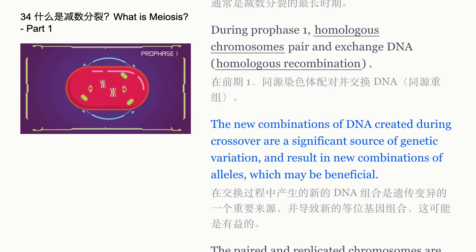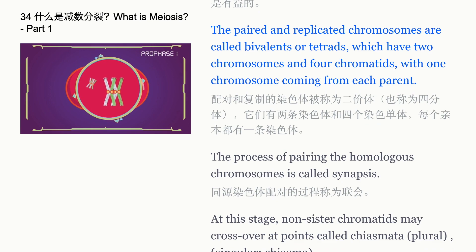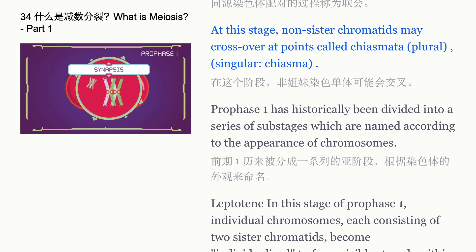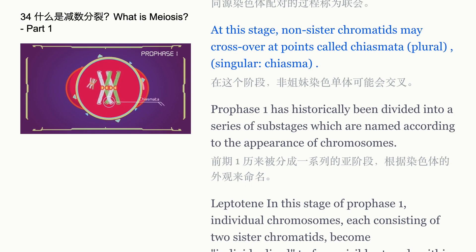The paired and replicated chromosomes are called bivalents or tetrads, which have two chromosomes and four chromatids, with one chromosome coming from each parent. The process of pairing the homologous chromosomes is called synapsis. At this stage, non-sister chromatids may cross over at points called chiasmata (singular: chiasma).